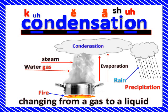So condensation is changing from a gas to a liquid. Once it gets into the clouds and turns back to water, then it comes back down as rain. That's called precipitation. So you've got evaporation, condensation, precipitation, and on the ground is accumulation.